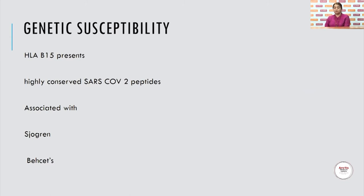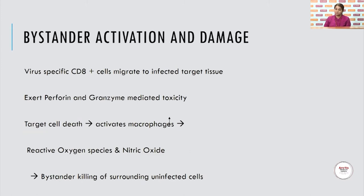Genetic susceptibility has been demonstrated because the HLA-B15 locus presents highly conserved SARS-CoV-2 peptides, and HLA-B15 is associated with two diseases: Sjogren's and another condition. Bystander activation and damage is another mechanism — virus-specific CD8 cells migrate to the infected target tissue and exert perforin and granzyme-mediated toxicity. There is target cell death, which activates macrophages, increases reactive oxygen species and nitric oxide, producing a bystander killing effect — that is, surrounding uninfected cells are also killed.